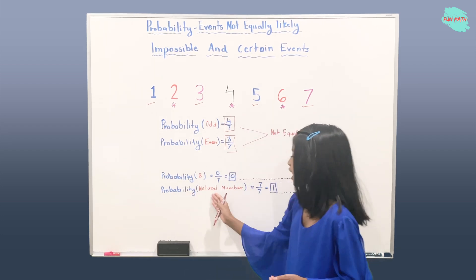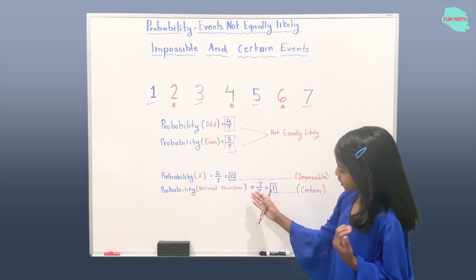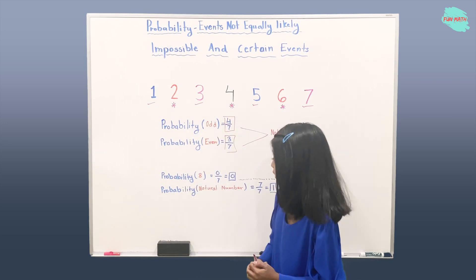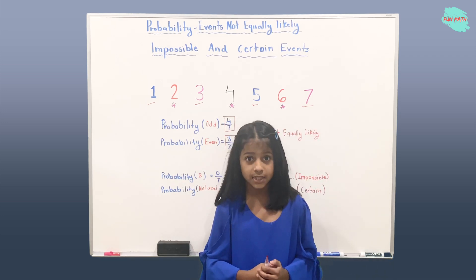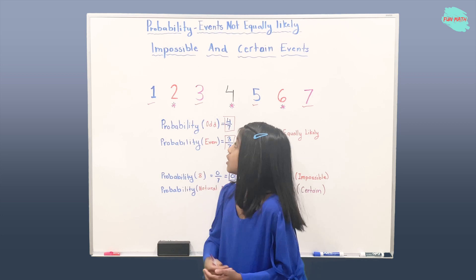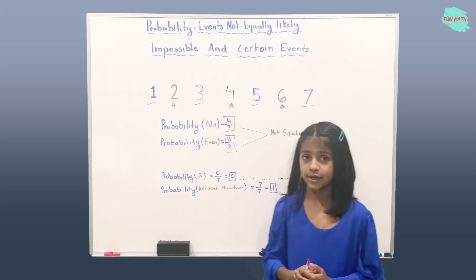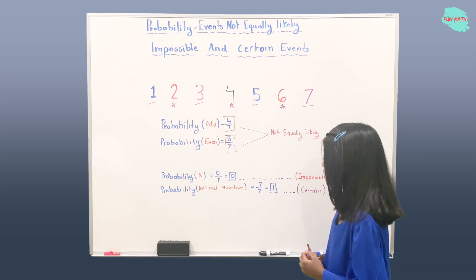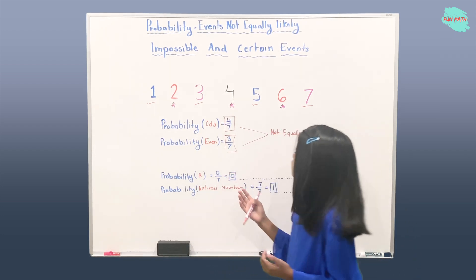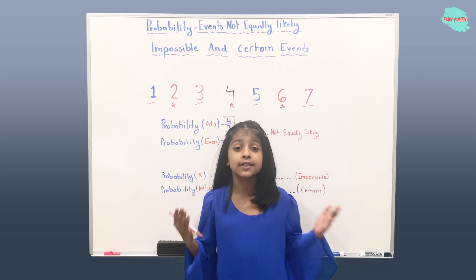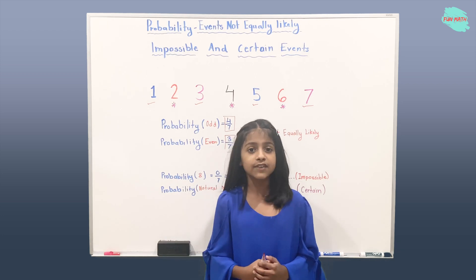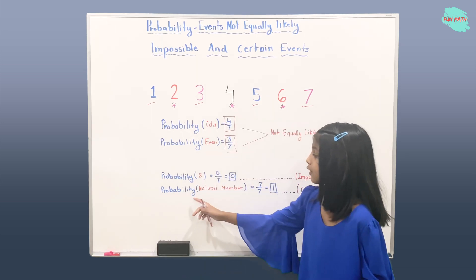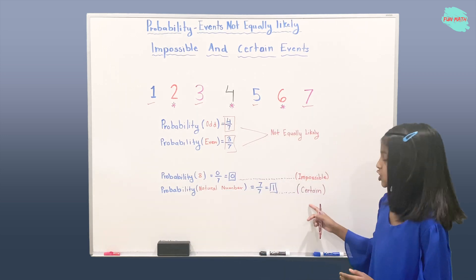Now let's find out the probability of getting a natural number, which gave us seven over seven. We got seven as our numerator because there are seven natural numbers, which are one through seven. We got seven as our denominator because there are seven total numbers in all possibilities. Seven over seven is just one, and the probability of getting a natural number is a certain event.